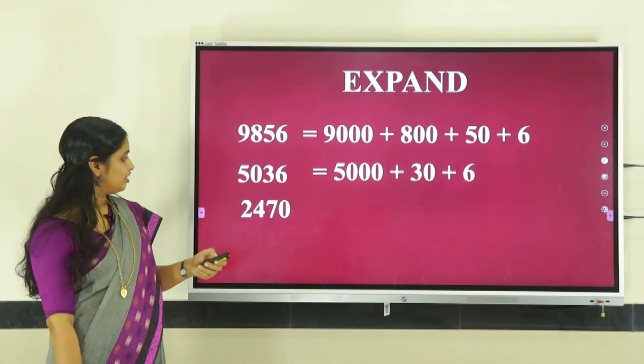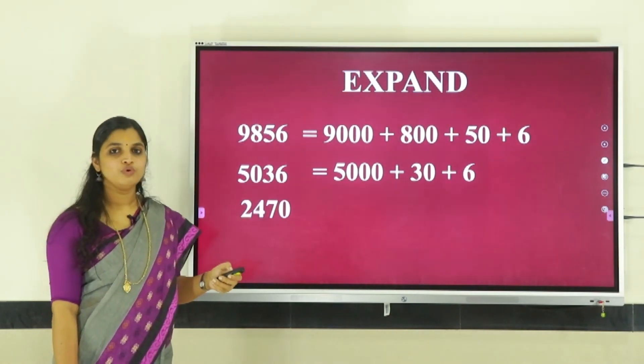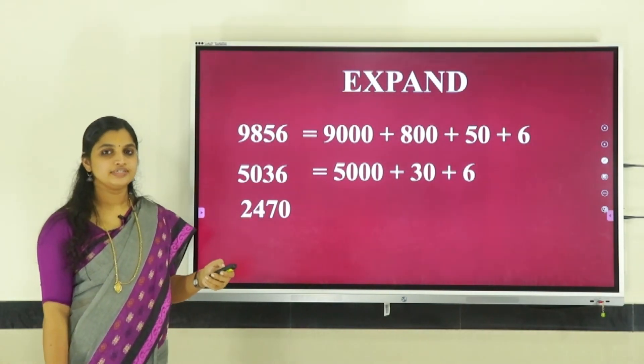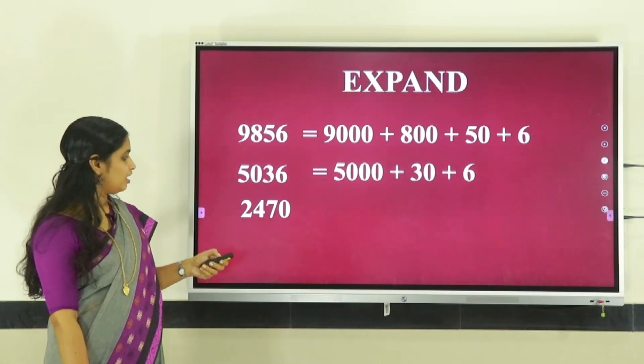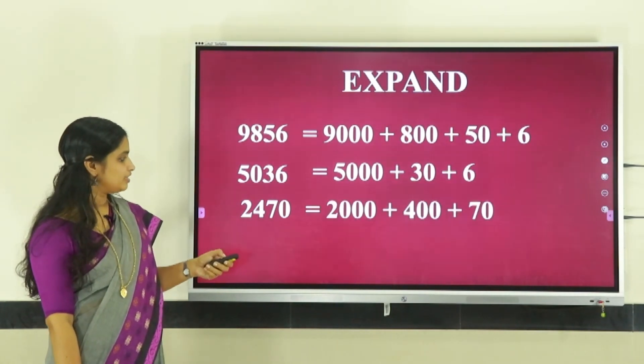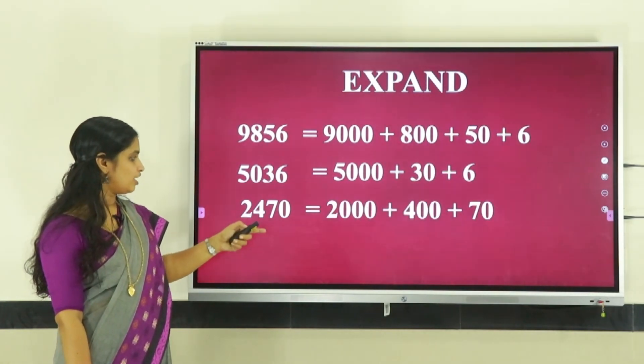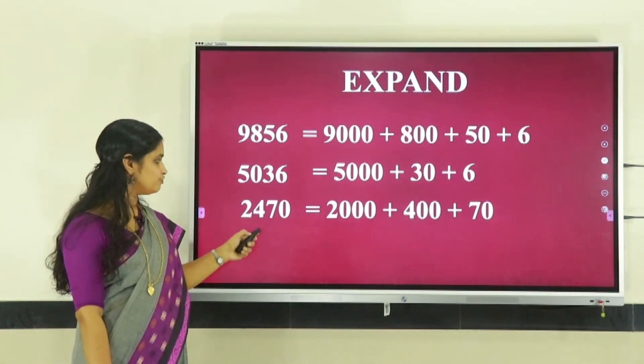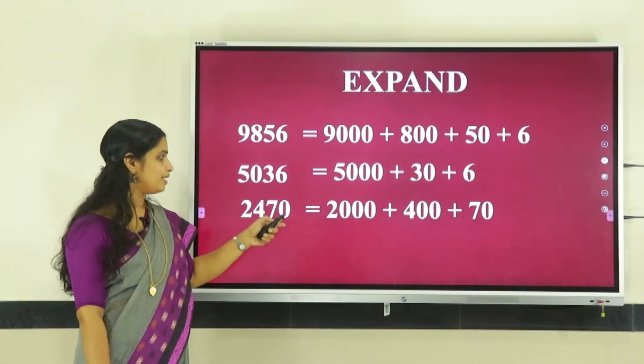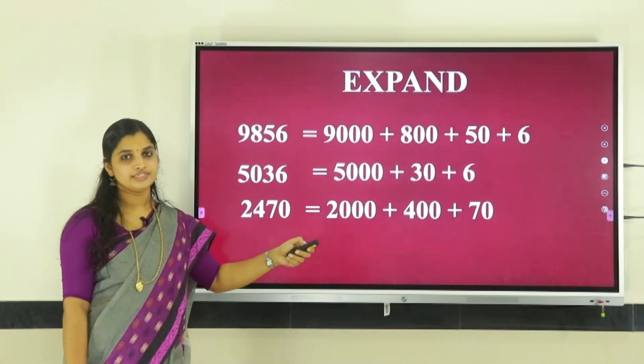The next number is two thousand four hundred and seventy. When we expand this, we get two thousand plus four hundred plus seventy.